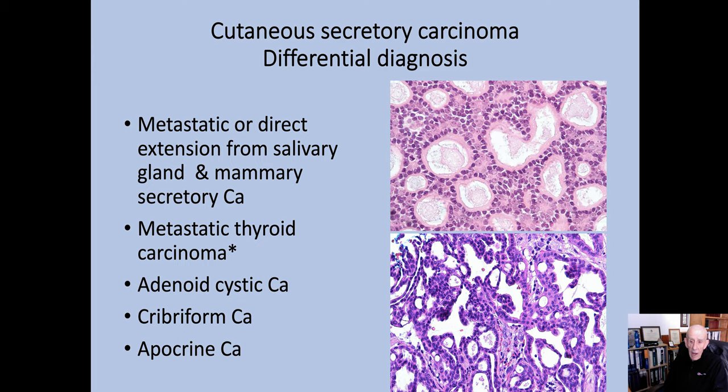For the differential diagnosis of secretory carcinoma, the most important consideration is breast or salivary gland metastasis. A thyroid carcinoma can sometimes look like a secretory carcinoma, but TTF1 negativity would exclude that. Primary cutaneous apocrine carcinoma and adenoid cystic are also listed in the differential.